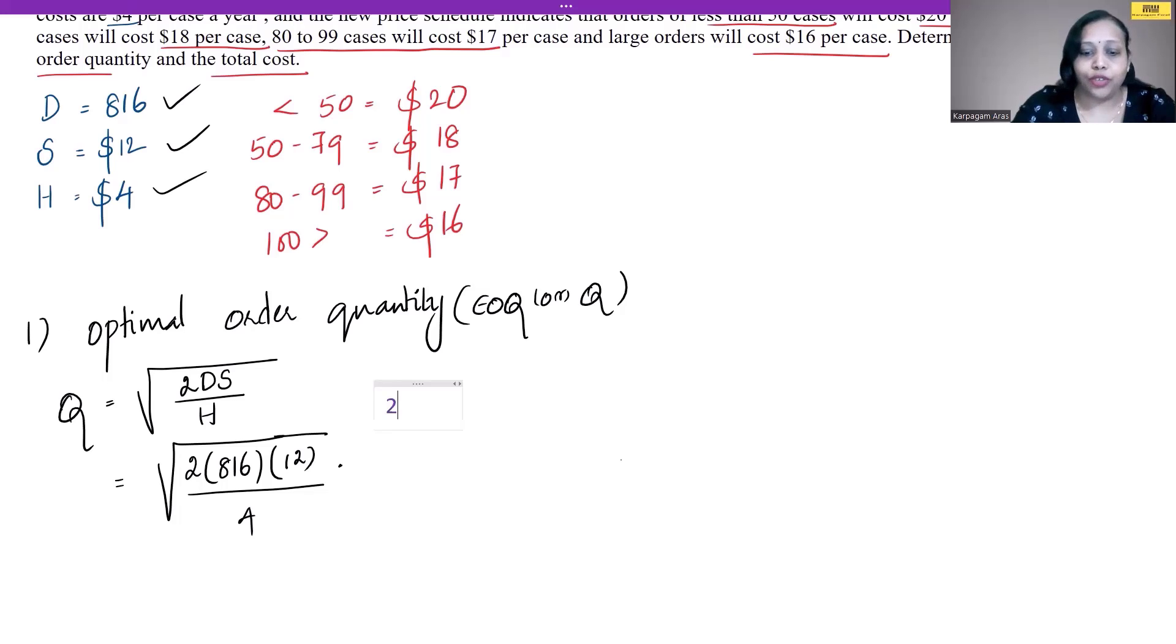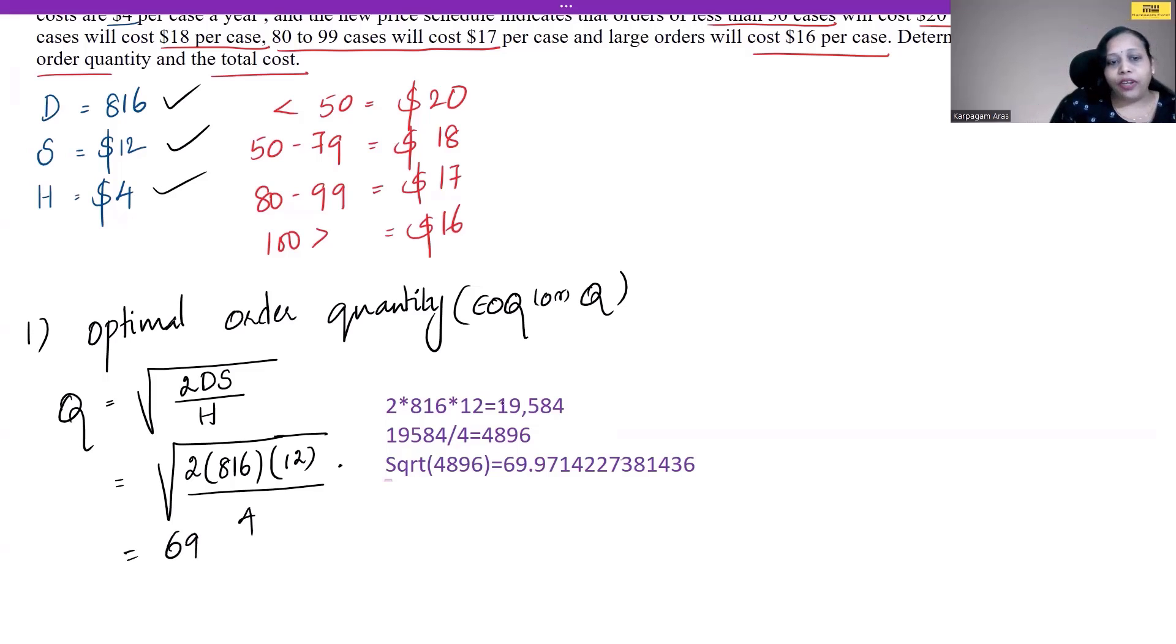The holding cost is $4. Now, multiplying 2 × 816 × 12 gives us 19,584. 19,584 ÷ 4 gives us 4,896. Let's calculate the square root of 4,896—we get 69.97, approximately 70 cases. So by default, the minimum quantity we must order is 70 units. This is the economic order quantity that we have identified.